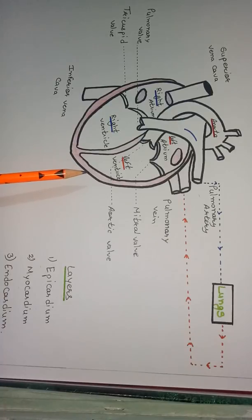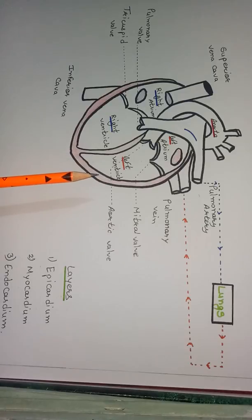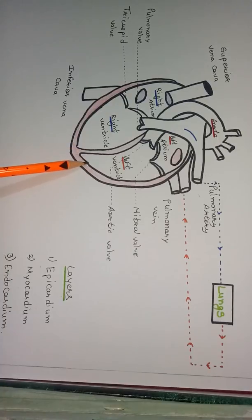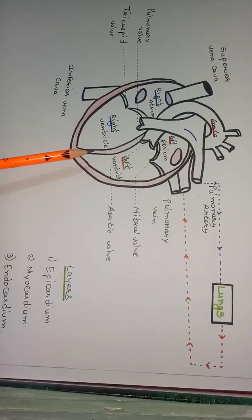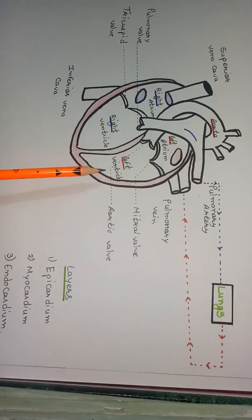The main function of the myocardium is to help the heart to contract and to relax. When the heart contracts, blood goes outside the heart, and when the heart relaxes, blood starts to fill inside the heart. Below the myocardium, there is one layer called the endocardium. This layer covers the heart from the inside and gives protection from the inner surface.